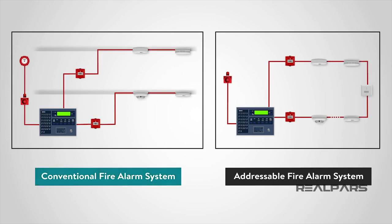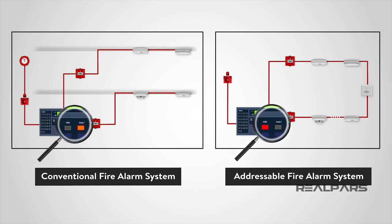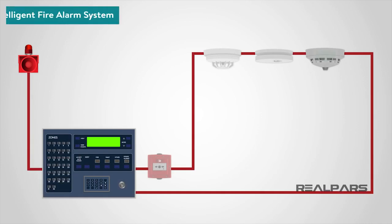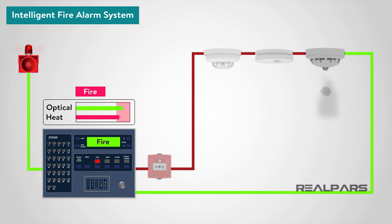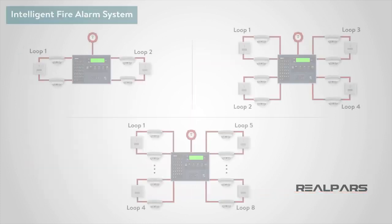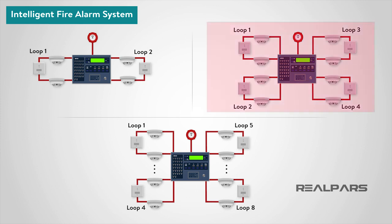In conventional and addressable systems, the detectors are not considered intelligent, as they can only give output signals representing the value of detected phenomena — it is left up to the control unit to decide whether there is a fire, fault, pre-alarm, or other condition. However, in an intelligent fire alarm system, each detector effectively incorporates its own computer, which evaluates the environment around it and communicates to the control panel whether there is a fire, fault, or if the detector head needs cleaning. Intelligent systems are far more complex and incorporate far more facilities than conventional or addressable systems. Their primary purpose is to help prevent the occurrence of false alarms. Intelligent fire alarm systems are available in two, four, and eight loop versions, which means large premises can be monitored from one single panel.